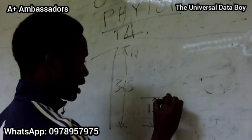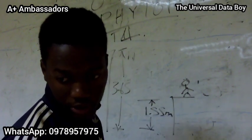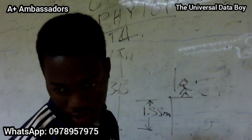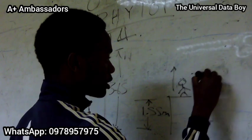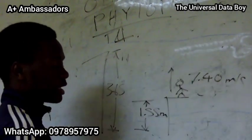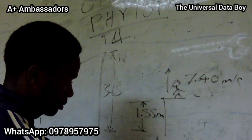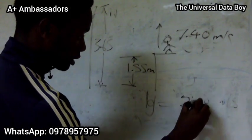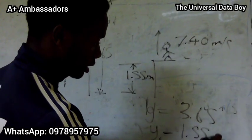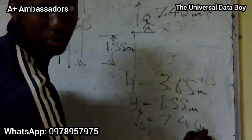The attacker is standing here and throws the rock straight up with an initial velocity of 7.4 meters per second. We have everything set up: Y equals 3.65, Y naught equals 1.55 meters, and V naught equals 7.4 meters per second.